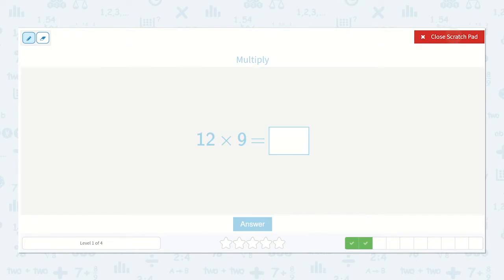Here we have 12 times 9. So we start with 9 times 2, which is 18. My 8 goes in the ones place. My 1 goes in the tens place. Now we have 9 times 1, which is 9. We can't forget to add on that extra 1, so that is 10. 108 is my final answer.